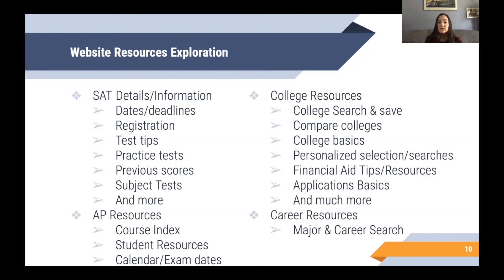The AP resources for students of the Advanced Placement Program include a course index, a list of their courses, student resources, and calendar or exam dates for AP exams. The available college resources include the College Search and Save function, the ability to compare colleges, college basics, personalized selection and searches for colleges that fit you, financial aid tips and resources, application basics, and much more.